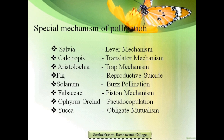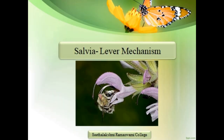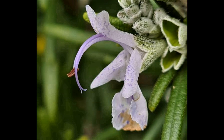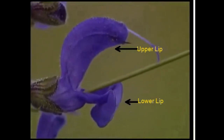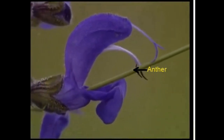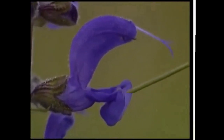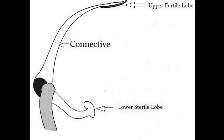The flower of Salvia is adapted for bee pollination. The corolla is bilabiate, having an upper lip and lower lip, with two stamens. A lever mechanism helps in pollination. Each anther has an upper fertile lobe and a lower sterile lobe, separated by a long connective which helps the anther swing freely. When a bee visits the flower, it sits on the lower lip, which acts as a platform, and enters the flower to suck nectar by pushing its head into the corolla.